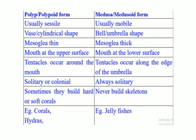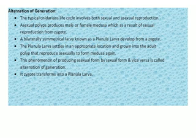Polyps can be solitary — living as a single individual — or colonial, living in a group. Medusa are always solitary. Polyps sometimes build hard or soft corals, but medusa never build any skeletal corals. Examples of polyps are corals and hydra; examples of medusa are jellyfish.